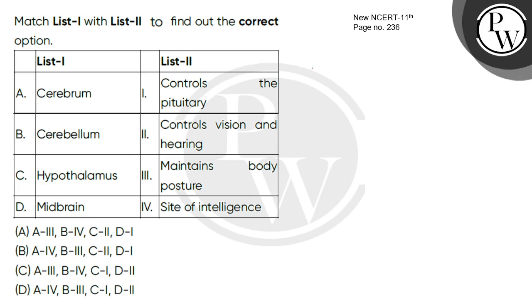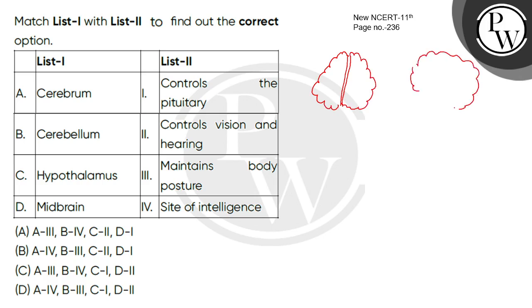Cerebrum is one of the core brain structures. When we talk about the Cerebrum, it divides longitudinally into right and left cerebral hemispheres. These hemispheres are connected to each other by a tract of nerve fibers which is called the Corpus Callosum.